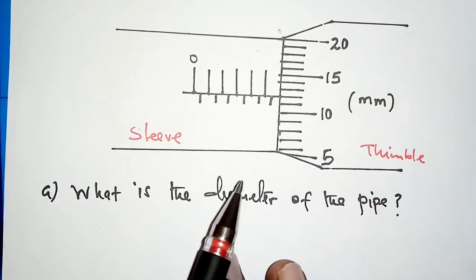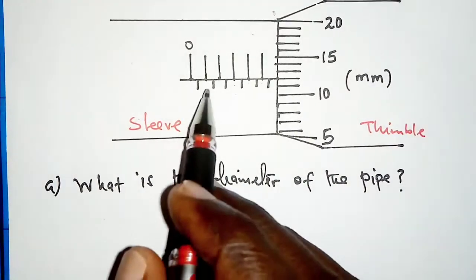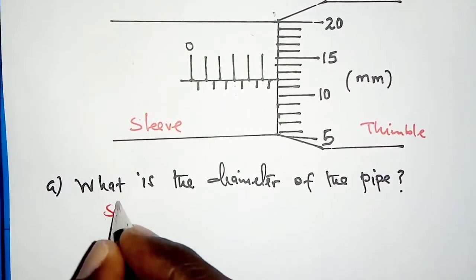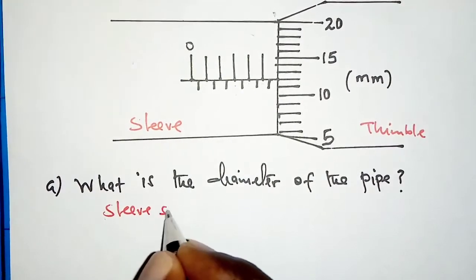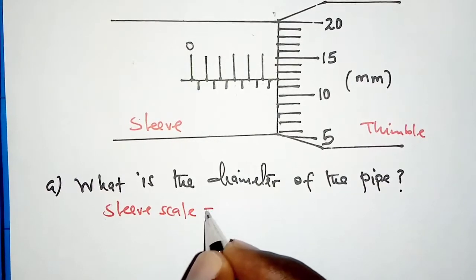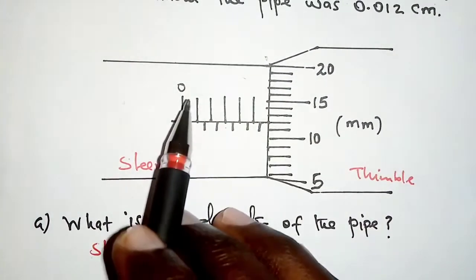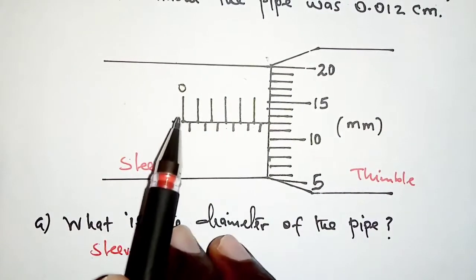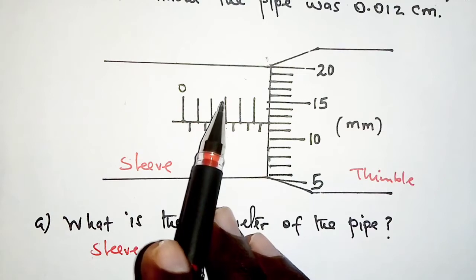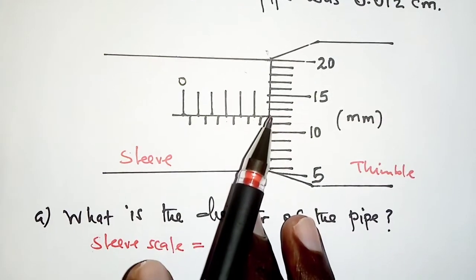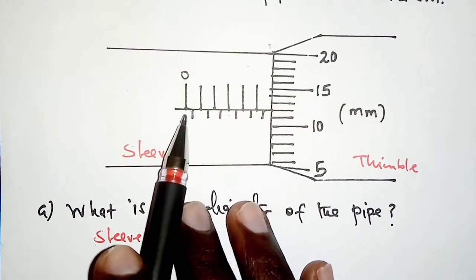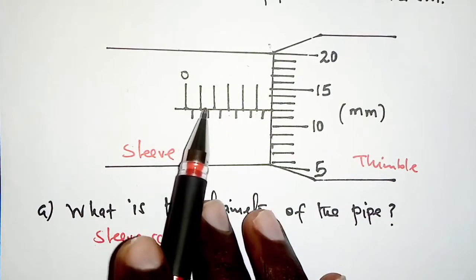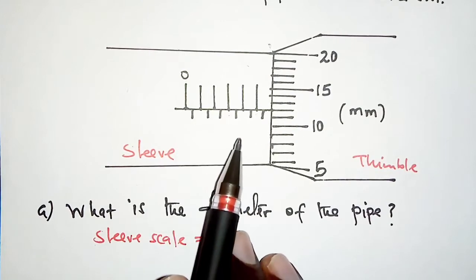We are going to take the readings on the scales, beginning with the sleeve scale. For the sleeve scale, on the upper part, these are the millimeter marks: 0, 1, 2, 3, 4, 5 millimeters. We need to take note that there are half millimeter marks, these shorter marks in between the millimeter marks.